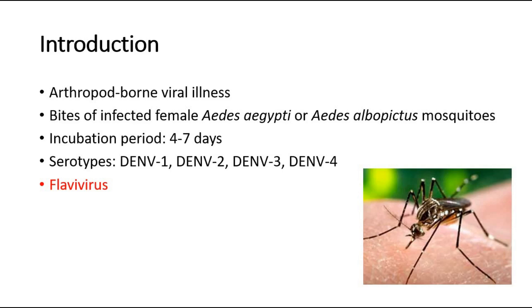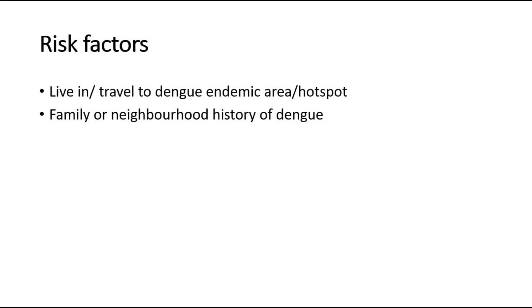The incubation period for dengue is around four to seven days, and there are four serotypes of dengue: dengue virus 1, 2, 3, and 4, and the virus is a flavivirus. The risk factors include living in or travelling to a dengue endemic area or hotspot, and also a history of dengue in your family or neighbourhood where there have been fogging activities going on around your house area.